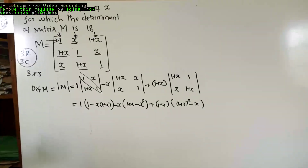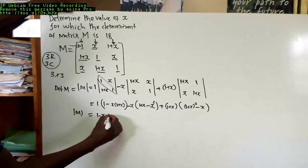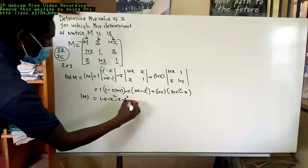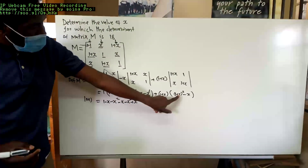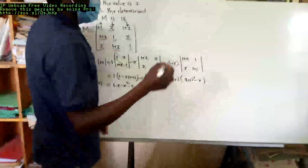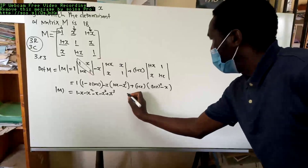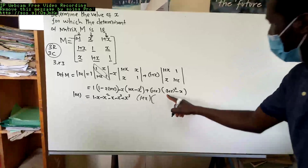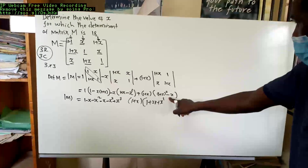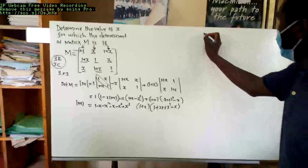From there, we are going to simplify and get the determinant of M. If you open this bracket you get 1 minus X minus X squared. Open this bracket with negative X to get negative X, negative X squared, plus X cubed. Now open this bracket first before you open it with 1 plus X. So we rewrite this as 1 plus X into: if you square this one you get 1 plus 2X plus X squared, then we remember to subtract X.